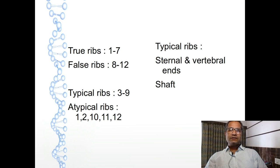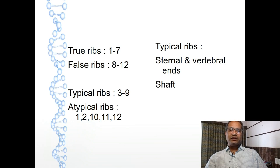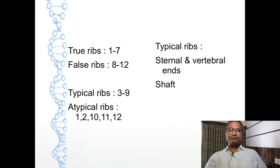The remaining two ribs, the 11th and 12th, have no direct connection with the sternum with or without costal cartilage. The lateral ends of these two ribs are present in the muscle mass of the back, capped by cartilage. Therefore, the last two ribs have no connection with the sternum, and the 11th and 12th ribs are also known as floating ribs.